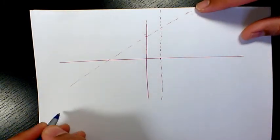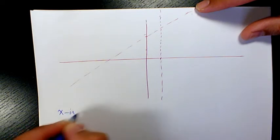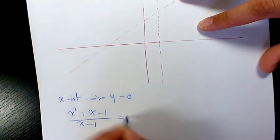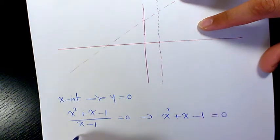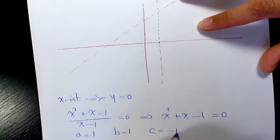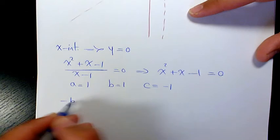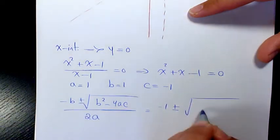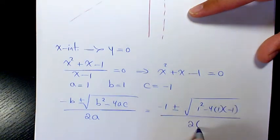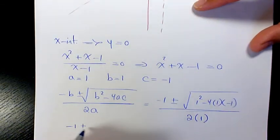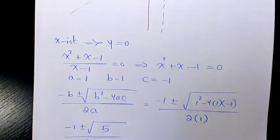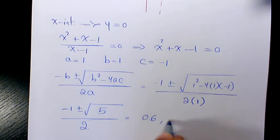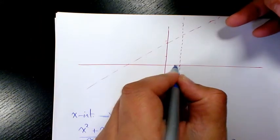Now let's find the x-intercepts and y-intercepts. For x-intercepts, set y = 0: (x² + x − 1)/(x − 1) = 0, so x² + x − 1 = 0. Using the quadratic formula — negative b ± √(b² − 4ac) over 2a — we get (−1 ± √5) / 2, which gives roots approximately 0.6 and −1.6. So we have x-intercepts at (0.6, 0) and (−1.6, 0).